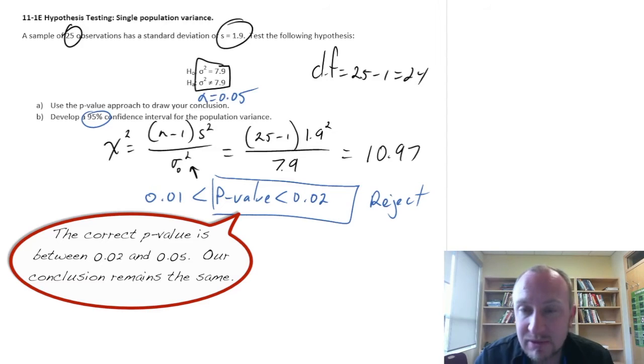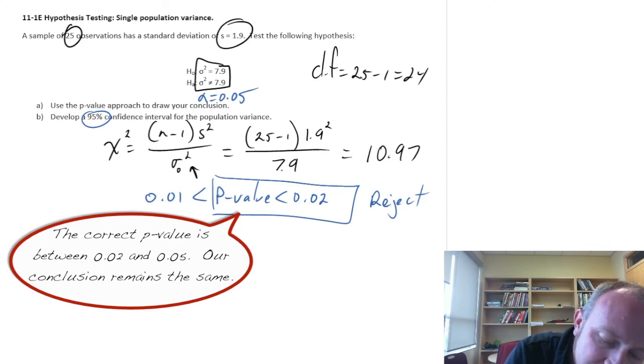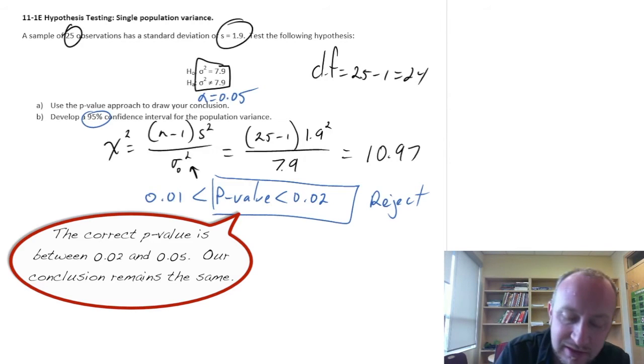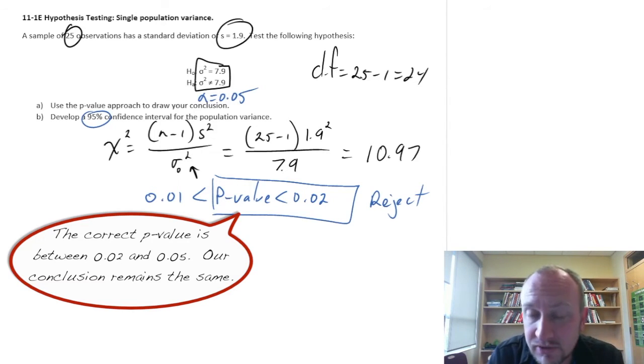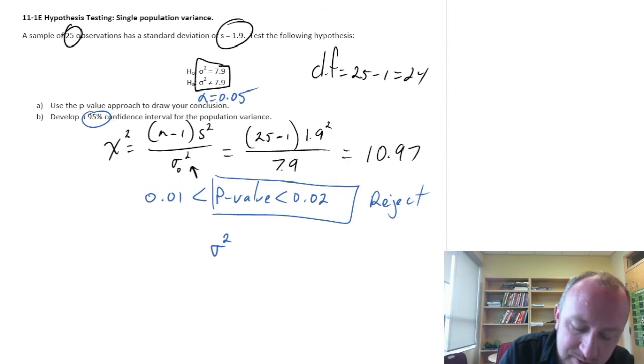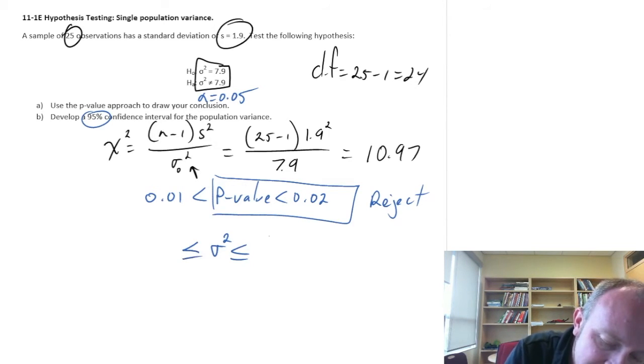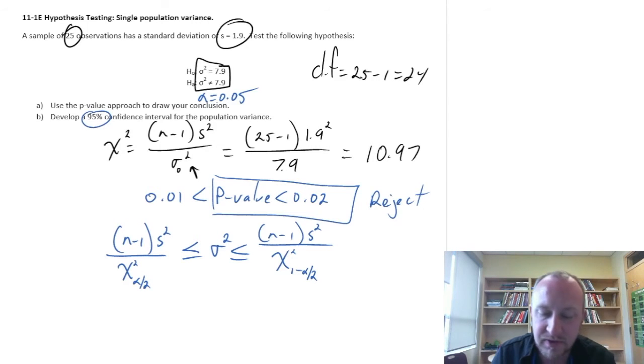Okay. So then part B. Now we develop our 95% confidence interval. So remember this is a little bit of a different looking formula than we used for the t and the z-tables because it's an asymmetric non-negative distribution. So that unknown population variance is somewhere in between these two values. n minus 1 s squared divided by that critical value for 1 minus alpha divided by 2. And this lower limit is n minus 1 s squared divided by chi-squared alpha divided by 2.